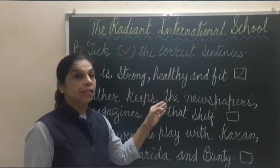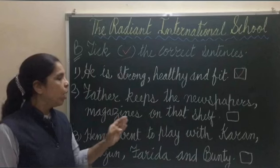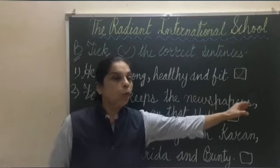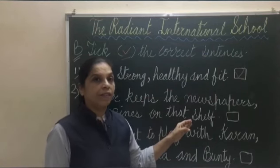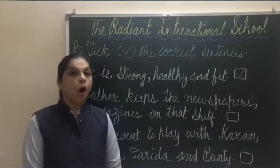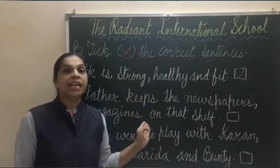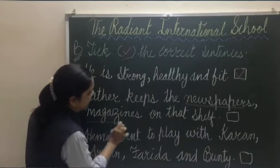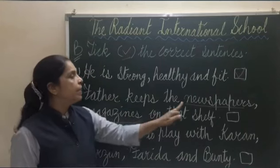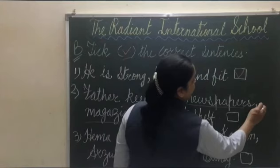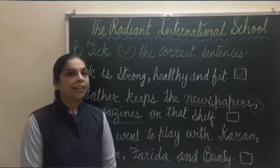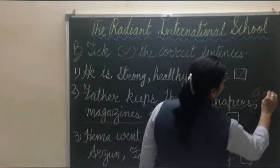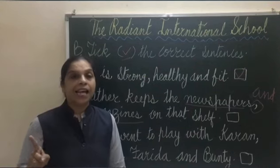Number two: Father keeps the newspapers, magazines on that shelf. Is this sentence correct or incorrect? This sentence is incorrect — because here newspapers and magazines are only two items. If there are two items, to separate them we write 'and,' and comma nahi aayega. So this sentence is incorrect.